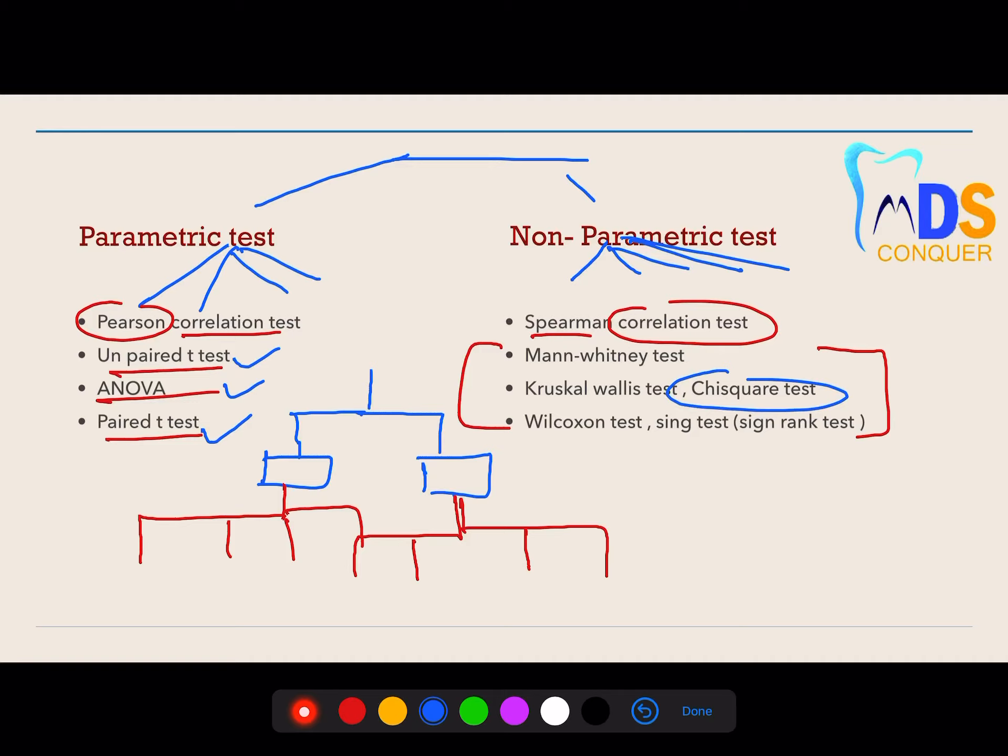I'm going to post some textbook-based material on the group where you can go through and prepare basic notes and skeleton work. The differences between parametric and non-parametric and this flowchart are very important for good scoring for this particular question.